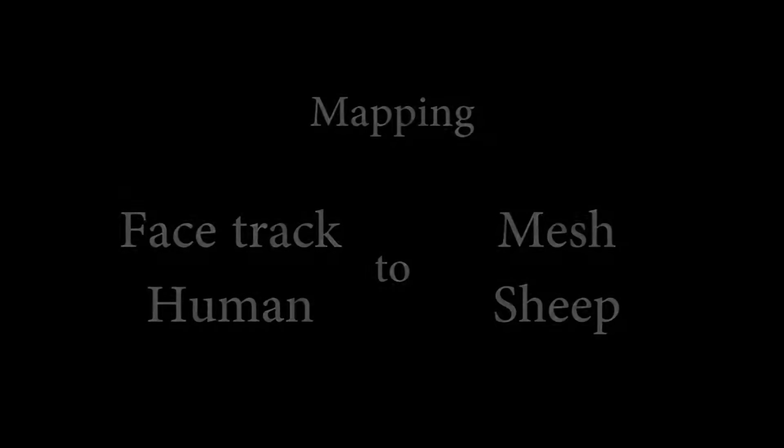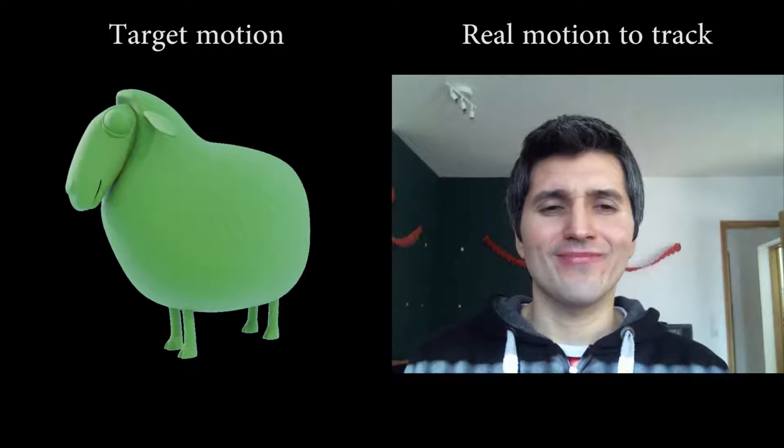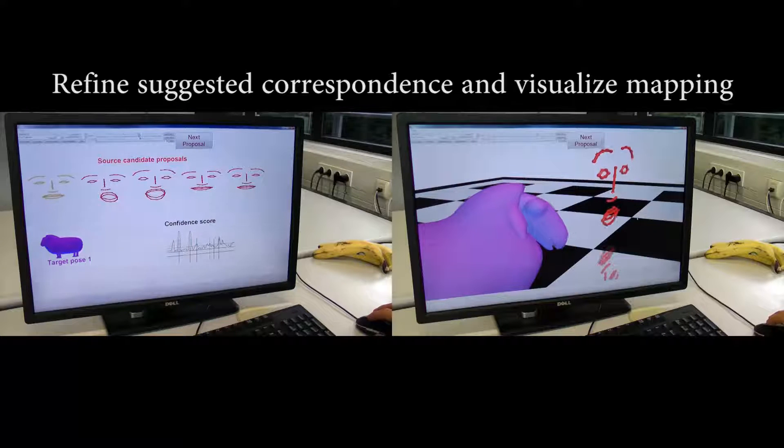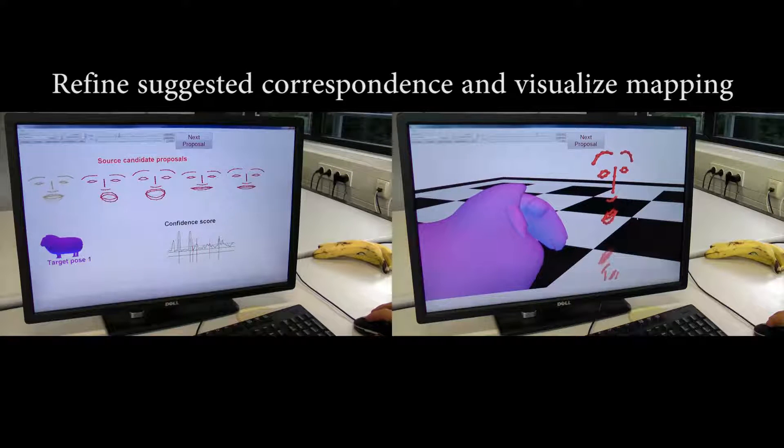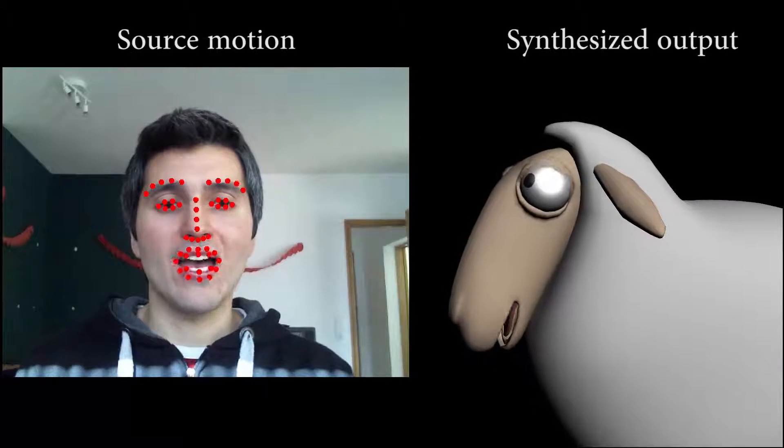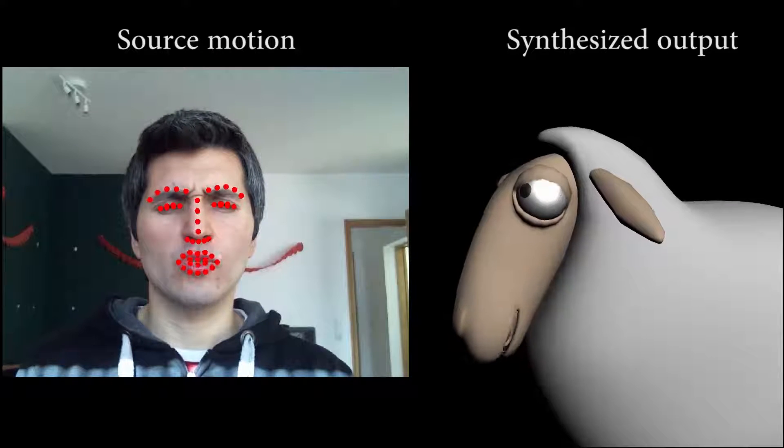In this example, we wish to control a limited range of sheep facial animation with real facial motion. With tracked facial features, our system automatically suggests good correspondence candidates to the left, which the user refines. The mapping is visualised to the right. While simple, the target sheep input was just a mesh sequence. No rigging or blend shapes were needed.